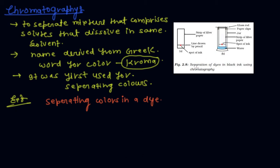In this diagram, separation of dyes in black ink using chromatography is described. This is a strip of filter paper, this is a line drawn by pencil, and this is the spot of ink. This is a glass rod, paper clips, a jar, a strip of filter paper, the spot of ink, and water.